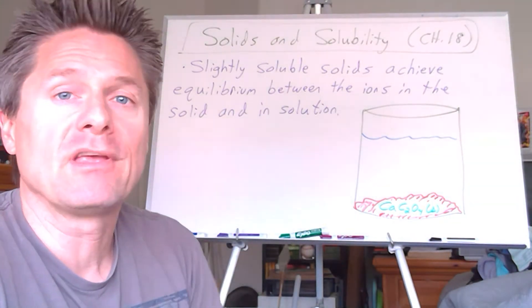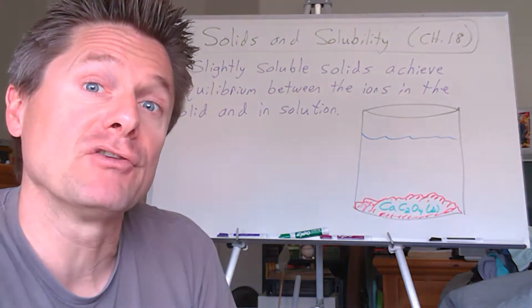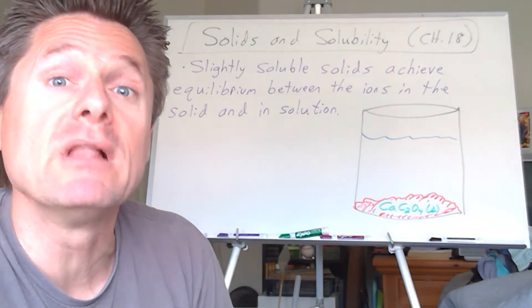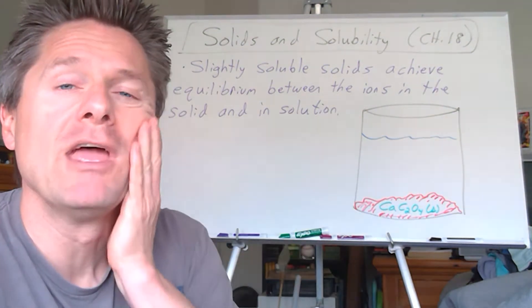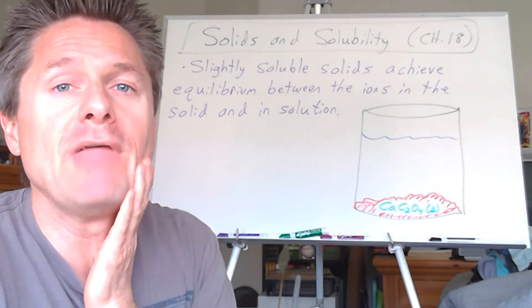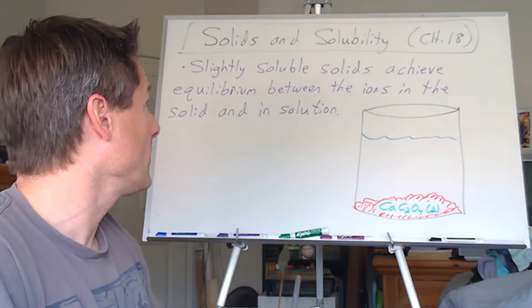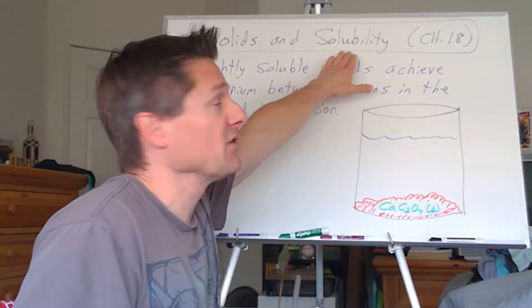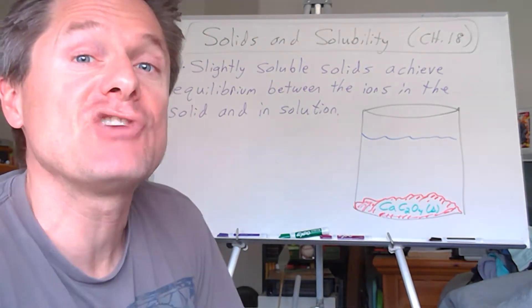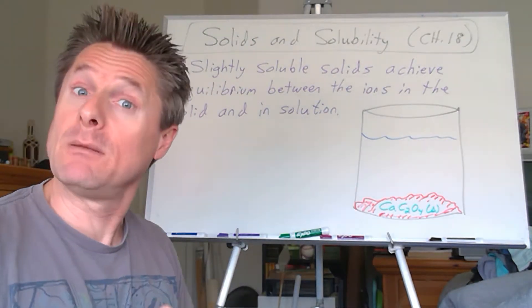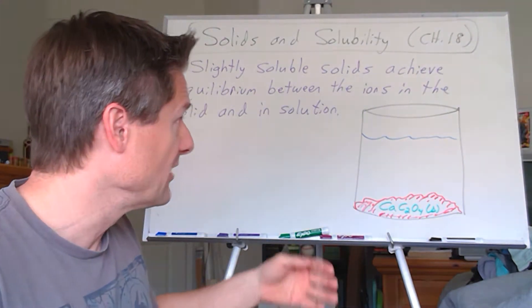We're going to measure this effect quantitatively — the solubility of a solid, how much it dissolves. Typically we'll do that for one liter of deionized water. We'll be able to calculate these things in this chapter using equilibrium, because we can figure out the equilibrium concentrations.